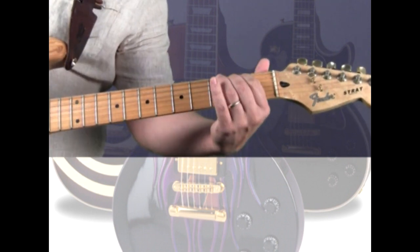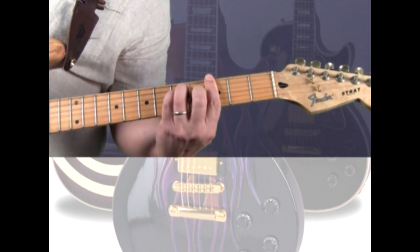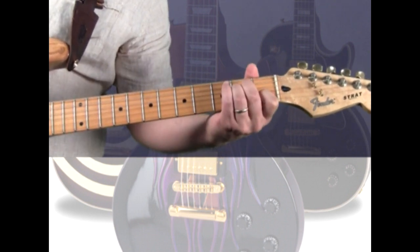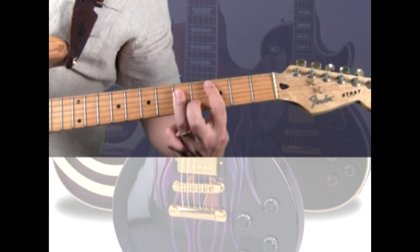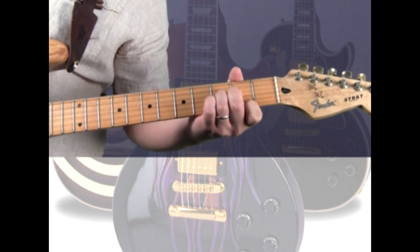All together, you have the E minor, F sharp diminished, G major, A minor, B minor, C major, D major, and resolve on E minor.